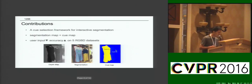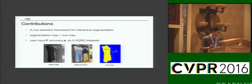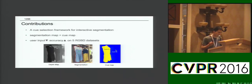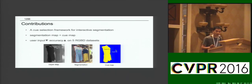We proposed a cue selection framework for interactive segmentation. Our method not only produces a segmentation map but also a cue map which interprets how different cues work together during the process. Extensive experiments show that our method can effectively reduce the amount of user input while at the same time increasing accuracy.